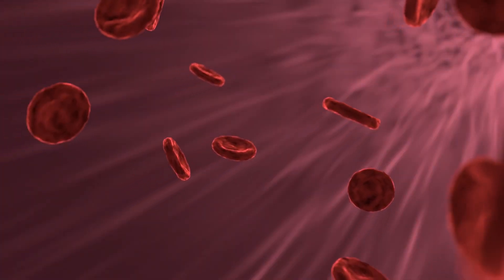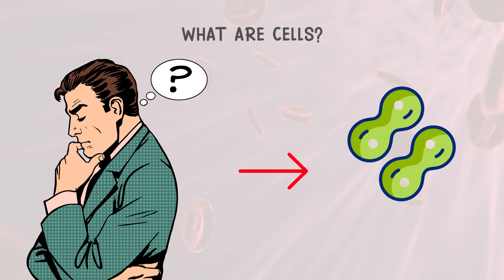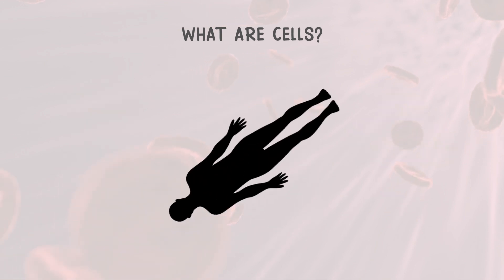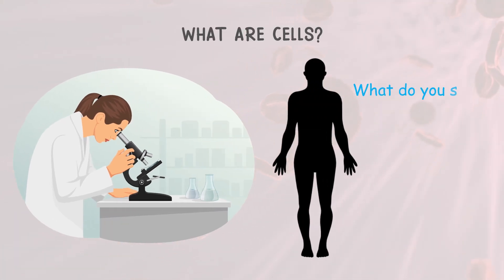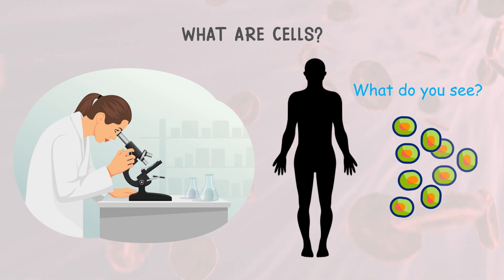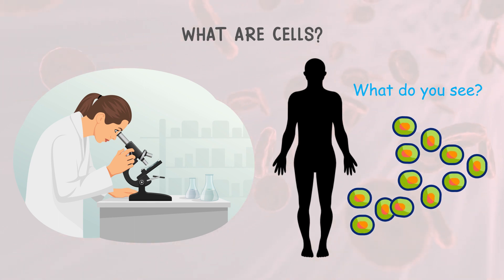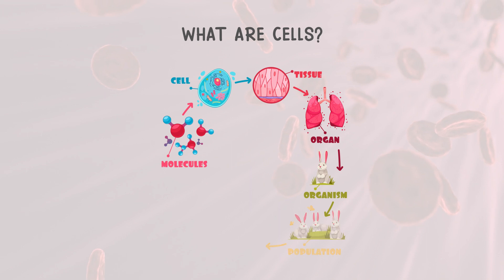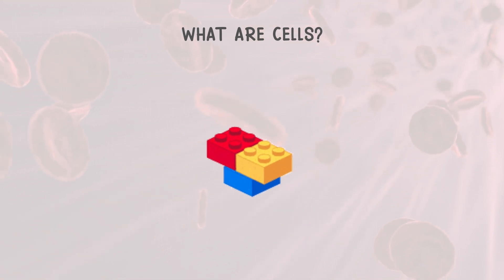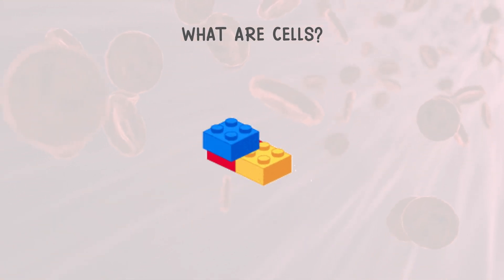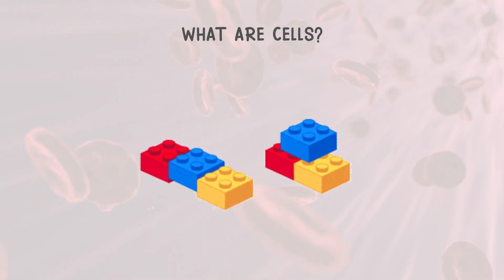Let's start by understanding what cells are. Imagine for a moment that you're looking at a human being under a microscope. What do you see? Trillions of cells working together to make a complex organism. Cells are the fundamental units of life — they're like the Lego bricks of living creatures, and they have a remarkable ability to replicate independently.